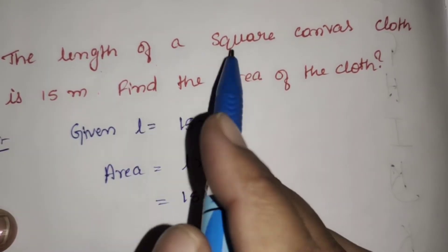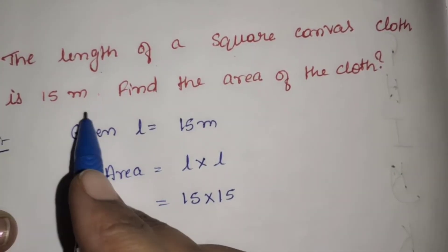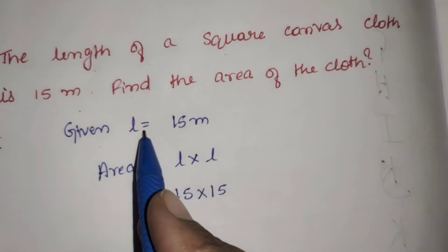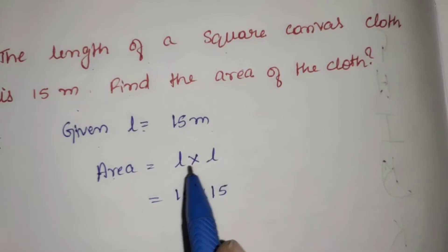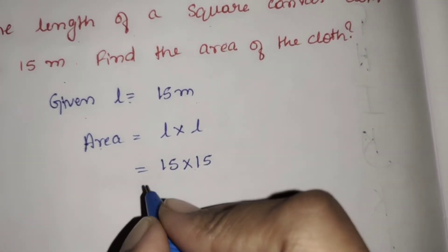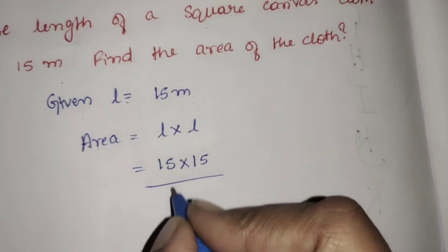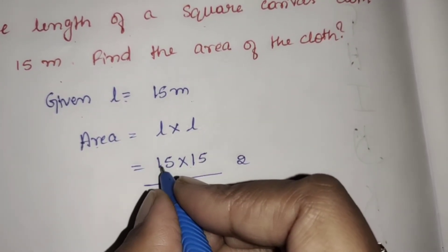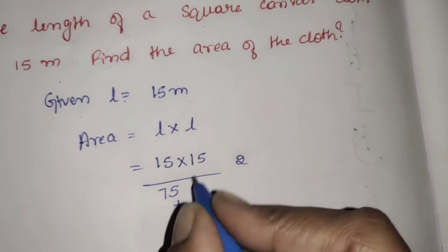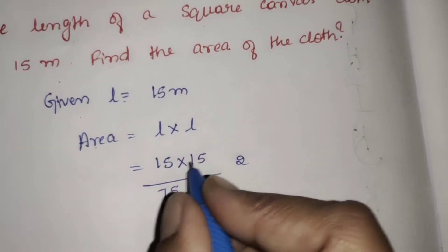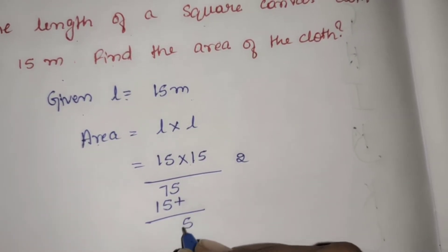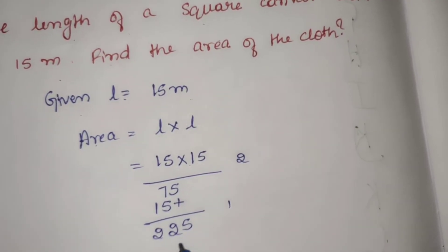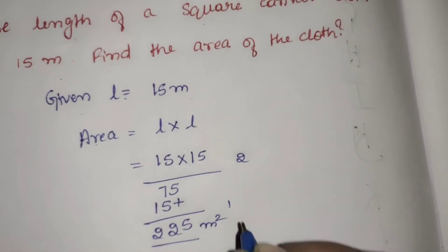Third problem: the length of a square canvas cloth is 15 meters. Find the area of the cloth. L is equal to 15 meters. Area is equal to length into length, that is 15 into 15. 5 fives are 25, carry 2. 5 ones are 5, 5 plus 2 is 7. 1 five is 5. 1 one is 1. 7 plus 5 is 12, carry 1. 1 plus 1 is 2. Result: 225 meter square.